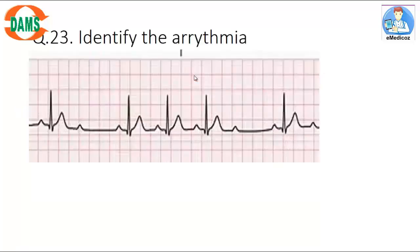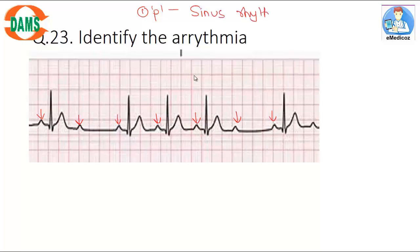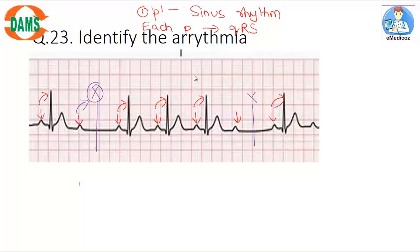Question 23: Identify the arrhythmia. Step 1: Look at the P wave — is it present? Yes, P wave is present, so this is sinus rhythm. Step 2: Is each P wave followed by a QRS? Some P waves are present but not followed by QRS — these are missed beats. When missed beats are present, this indicates AV block. Since a missed beat has occurred, it is second degree AV block, not first degree.